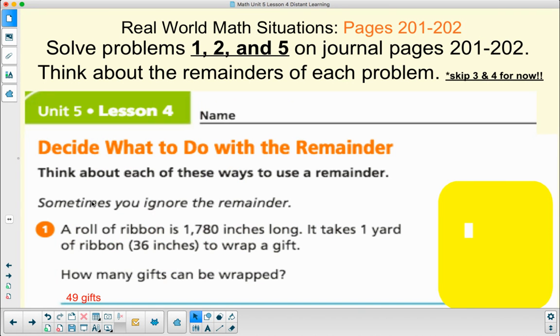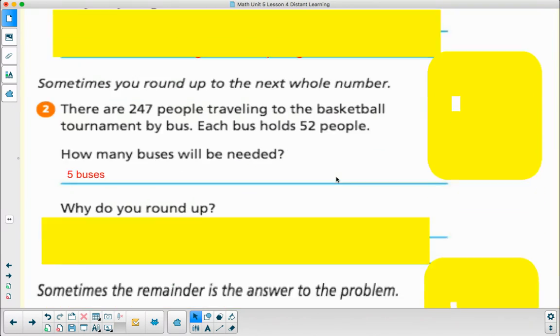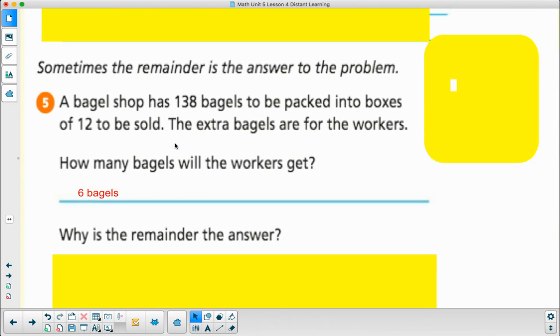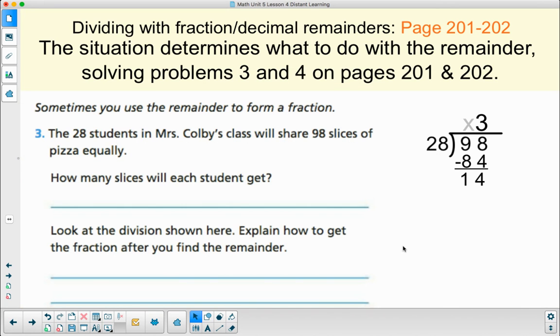Those are some examples where we ignore the remainder, we add up because of a remainder that says we need one more like we needed one more whole bus, or an example of where the remainder actually is what's left over is what our answer is. We have other cases for our remainder.